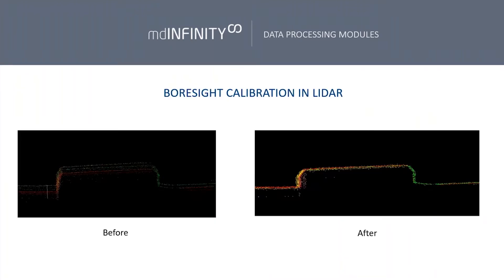As you can see on the two images: on the left, before the boresight calibration was applied, the points in the point cloud are all over the place, and obviously that's not going to give you very accurate results. On the right-hand side, after the boresight calibration was applied, the points in the point cloud are nicely on top of each other, which will result in very good results at the end of the day.